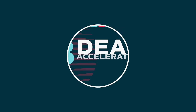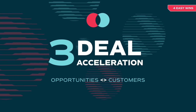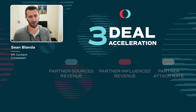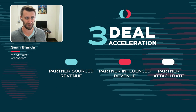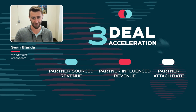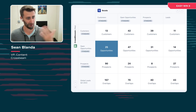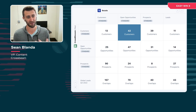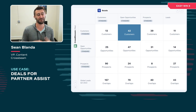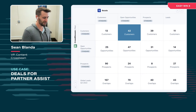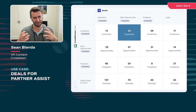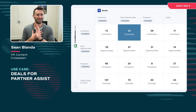Easy Win Number Three: Deal Acceleration. Closing deals is great — closing them faster is better. If you are measured on partner source, partner influence, and partner attach, this is the play for you. This win shows you all the deals you can get a partner assist on: the overlap of your opportunities to their customers, or the flip — their opportunities to your customers. These are people your team is trying to close that your partner has already closed. They can give you a warm introduction to the account, context, and intel to help your sales team close the deal. This is truly partner influence revenue.